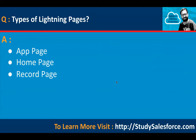Types of lightning pages: we have three types — app page, home page, and record page. If you want to create any of these pages, in Setup's Quick Find you need to search 'App Builder,' and through App Builder you can create any type of page.